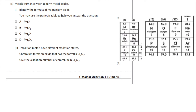The next question: metals burn in oxygen to form metal oxides. Identify the formula for magnesium oxide. Magnesium is in group two, so it forms a 2+ ion by losing two electrons, whereas oxygen is in group six so it gains two electrons to get a full outer shell, forming a 2− ion. For magnesium oxide, magnesium is 2+ and oxygen is 2−, so the formula is MgO — answer A.